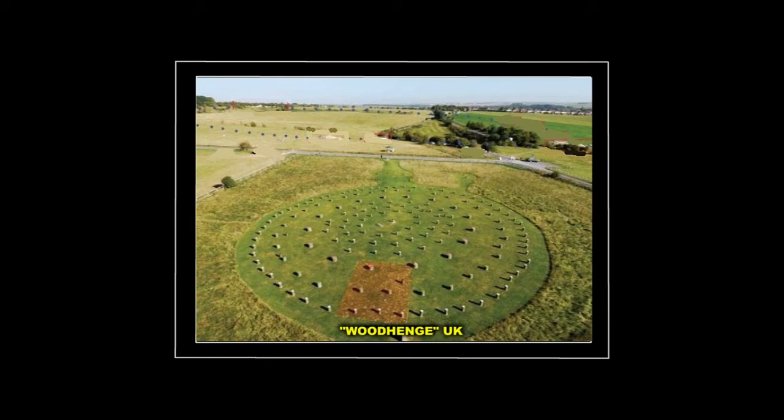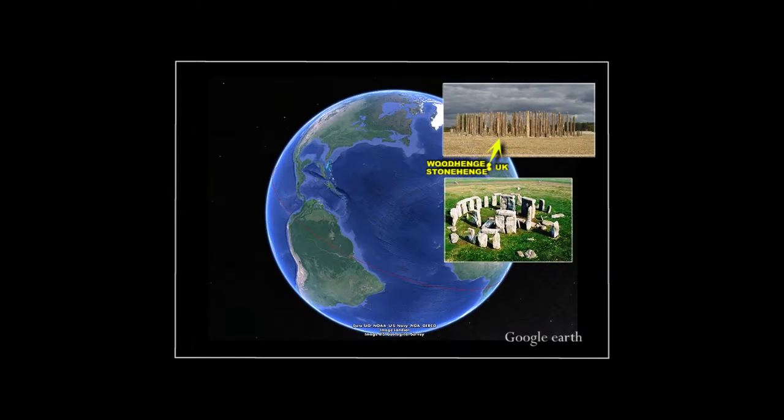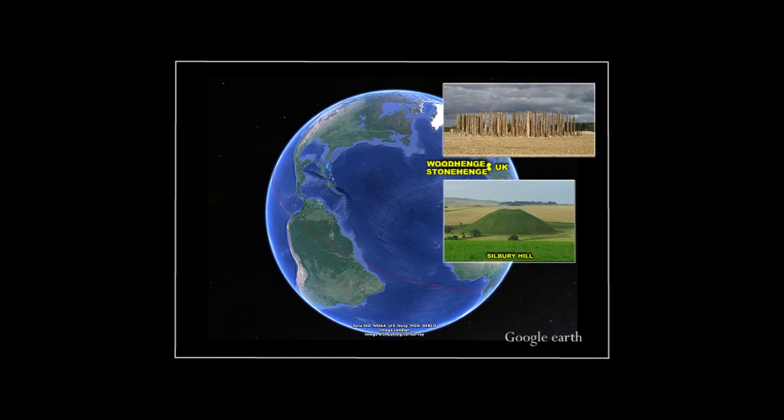This site, located in the United Kingdom, is known as Woodhenge, since it too was configured in the same concentric manner as the monoliths of nearby Stonehenge, and both of these sites are situated in close proximity to a series of earthen mounds much like this one.